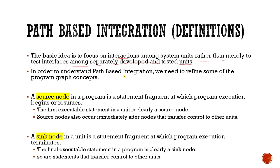In order to understand path-based integration, we need to refine some of the program graph concepts. First of all, a source node in a program is a statement fragment at which program execution begins or resumes. The first executable statement in the unit is clearly a source node. Source nodes also occur immediately after nodes that transfer control to other units.